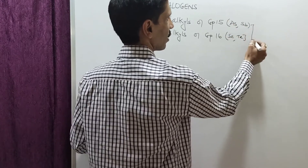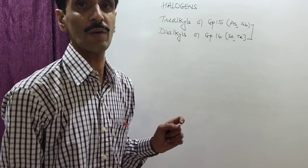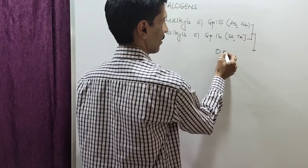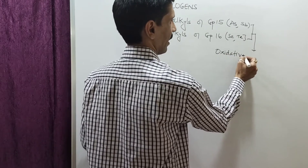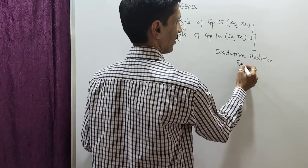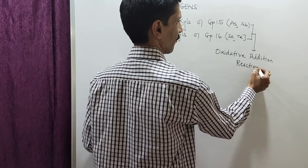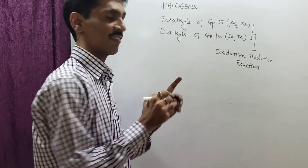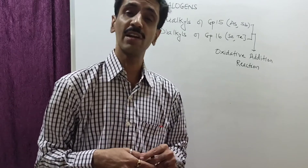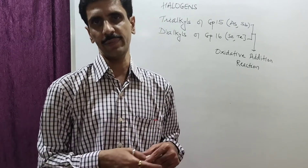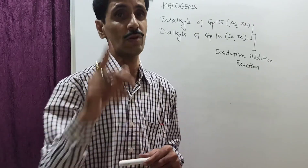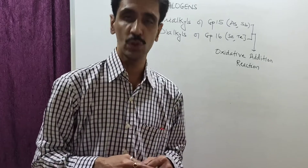Now, these alkyls when they are going to combine with halogen, they undergo a reaction that is called an oxidative addition reaction. My dear friends, I have mentioned this oxidative addition reaction when I was discussing the preparation of organometallic compounds, especially with respect to the organometallic part two.